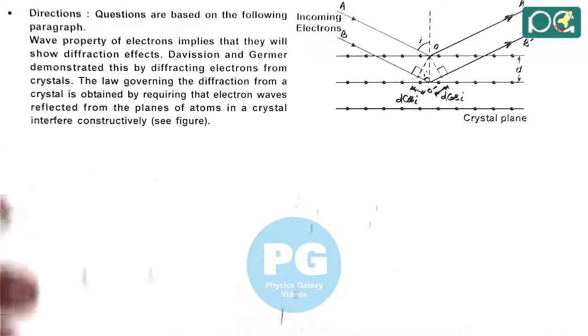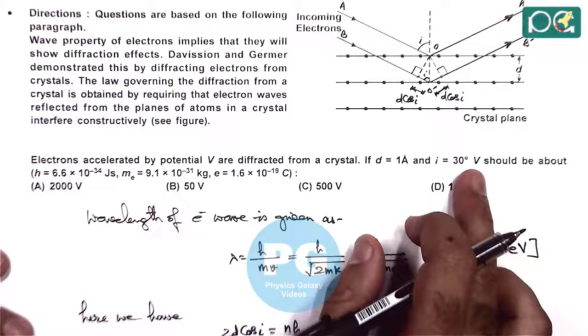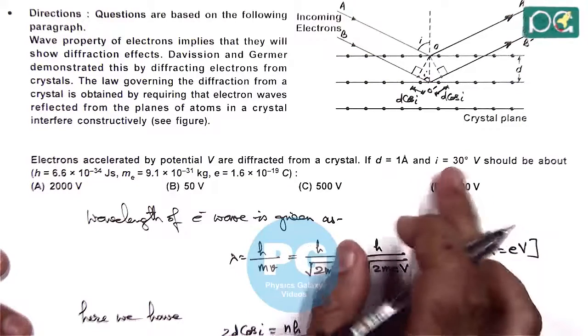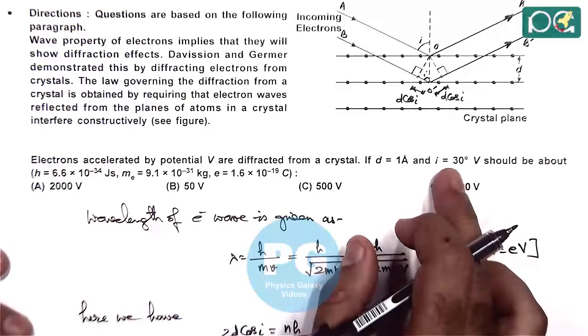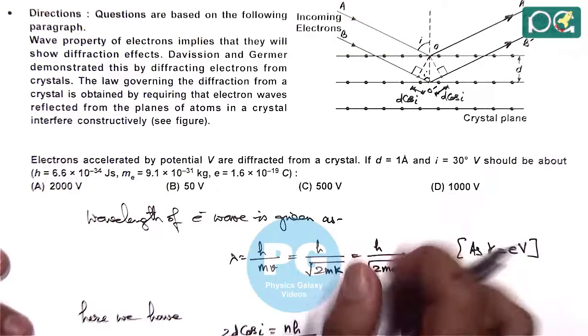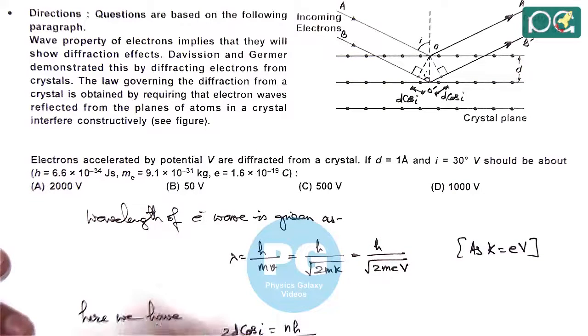And we are required to calculate the value of V for which D is taken as 1 angstrom, I is taken as 30 degrees. So we need to calculate the potential difference at which constructive interference will take place. So there are several values.